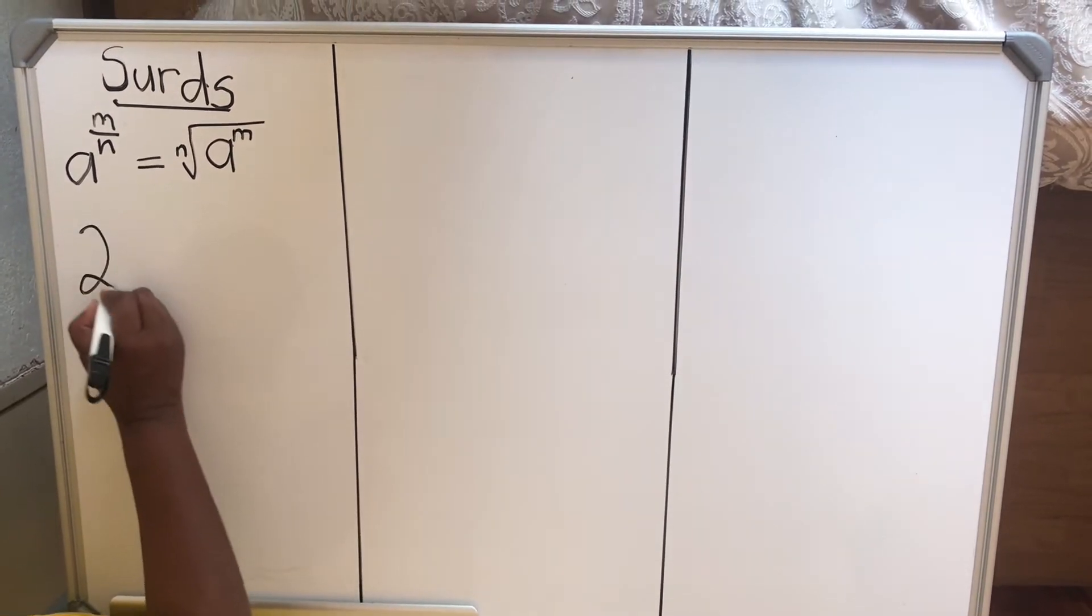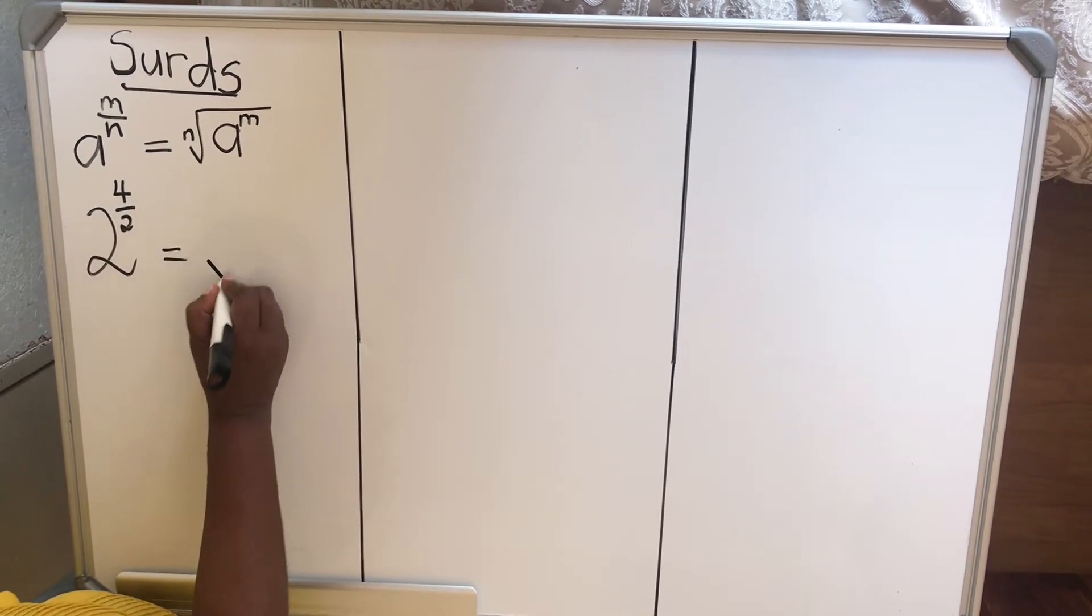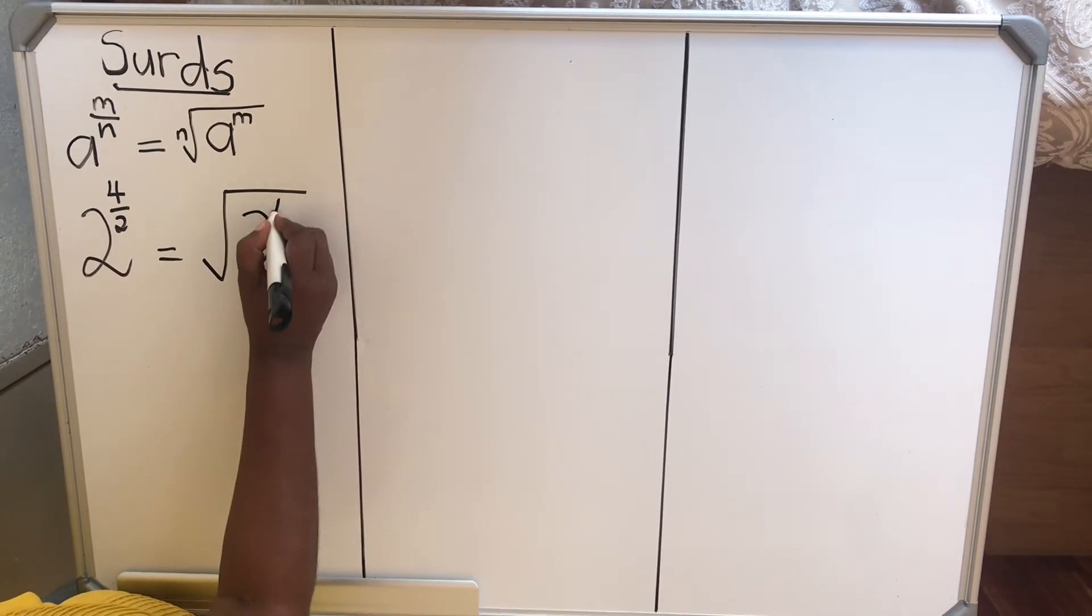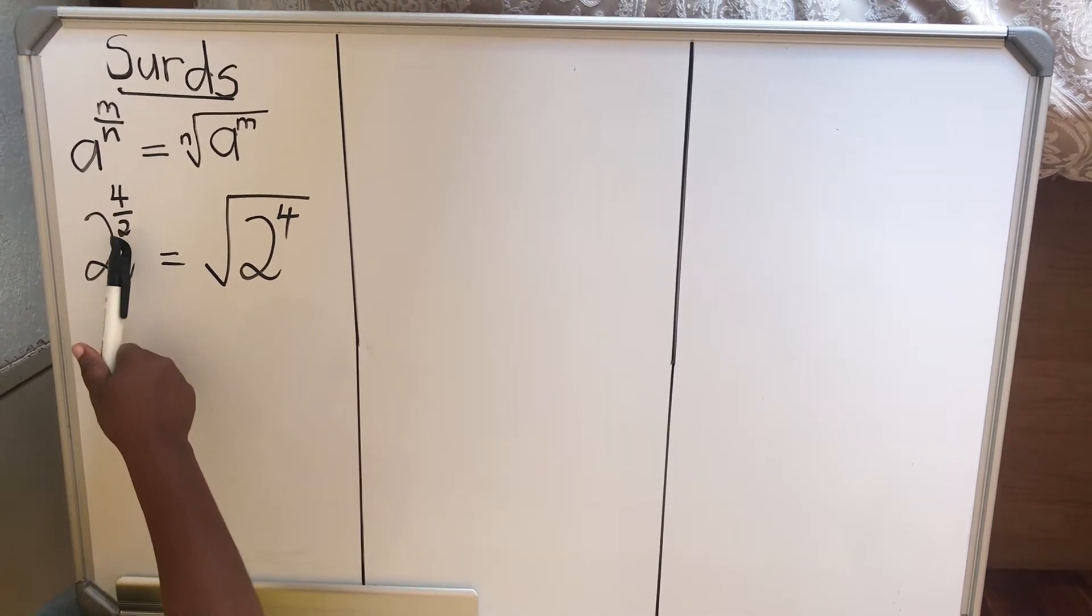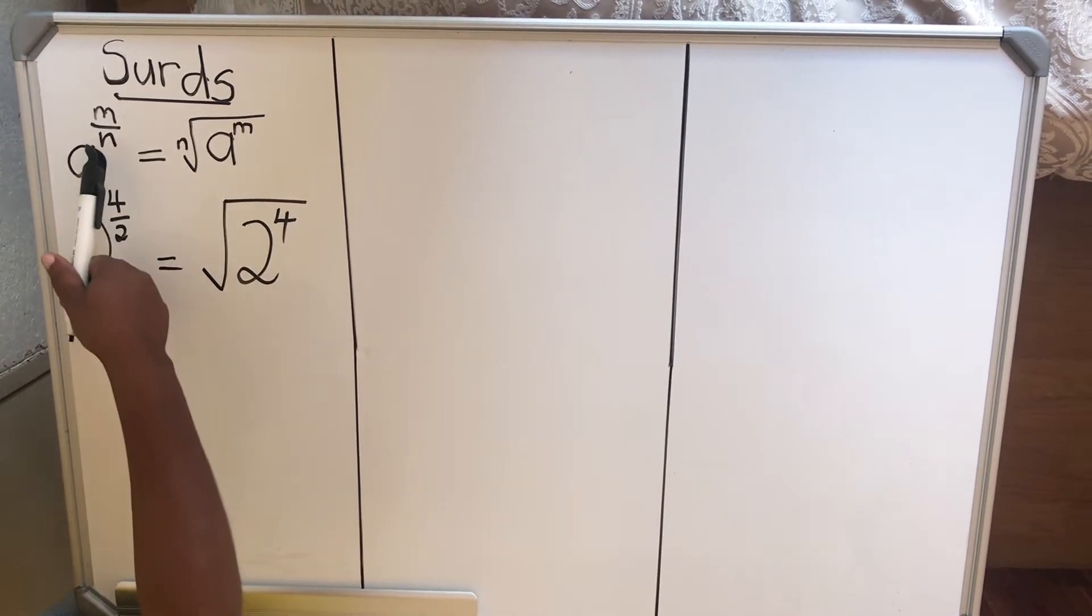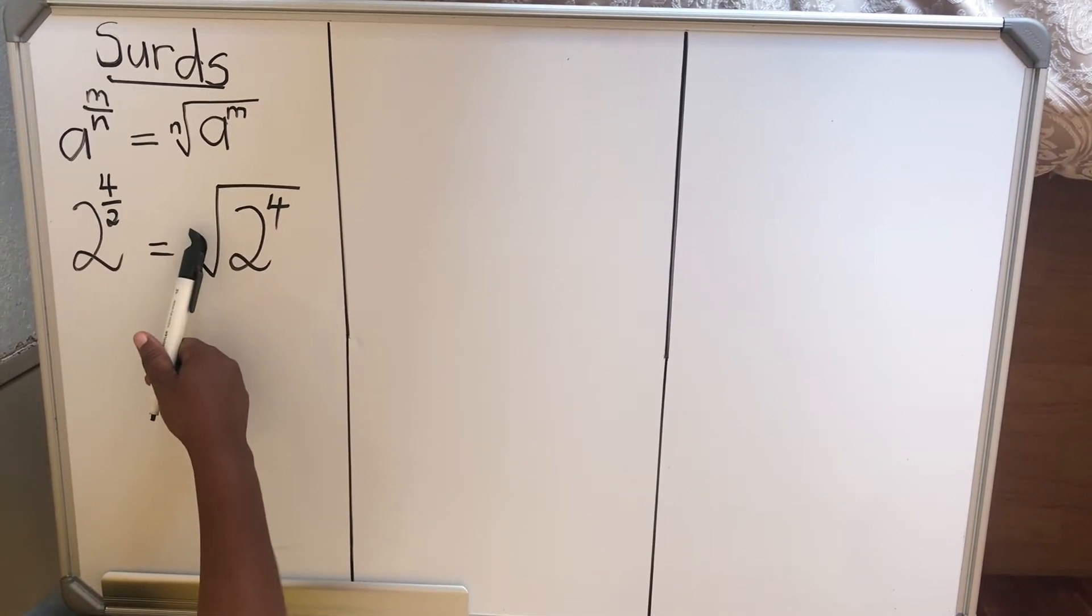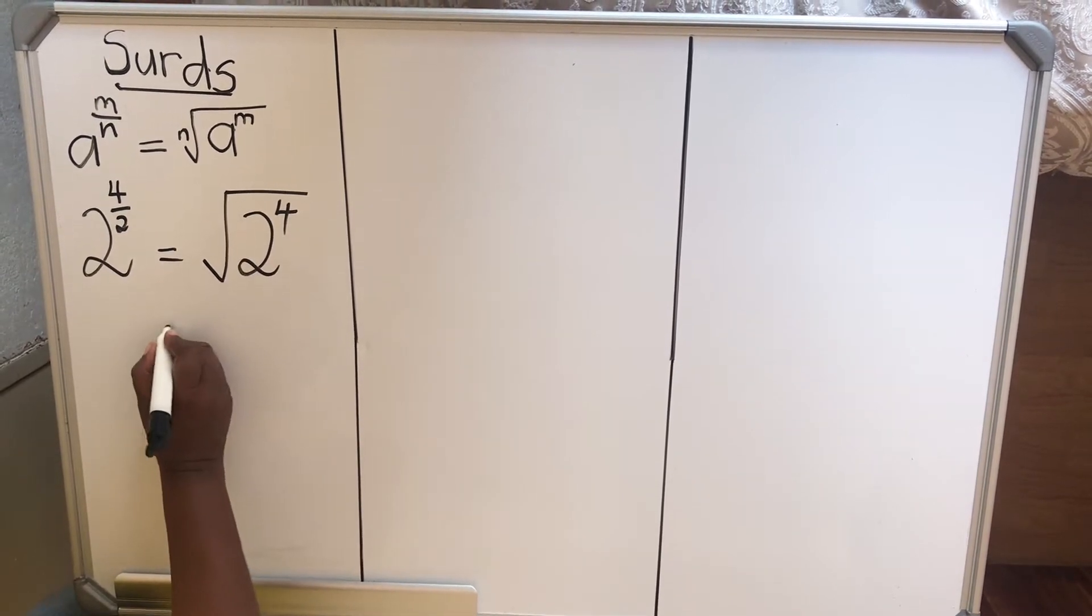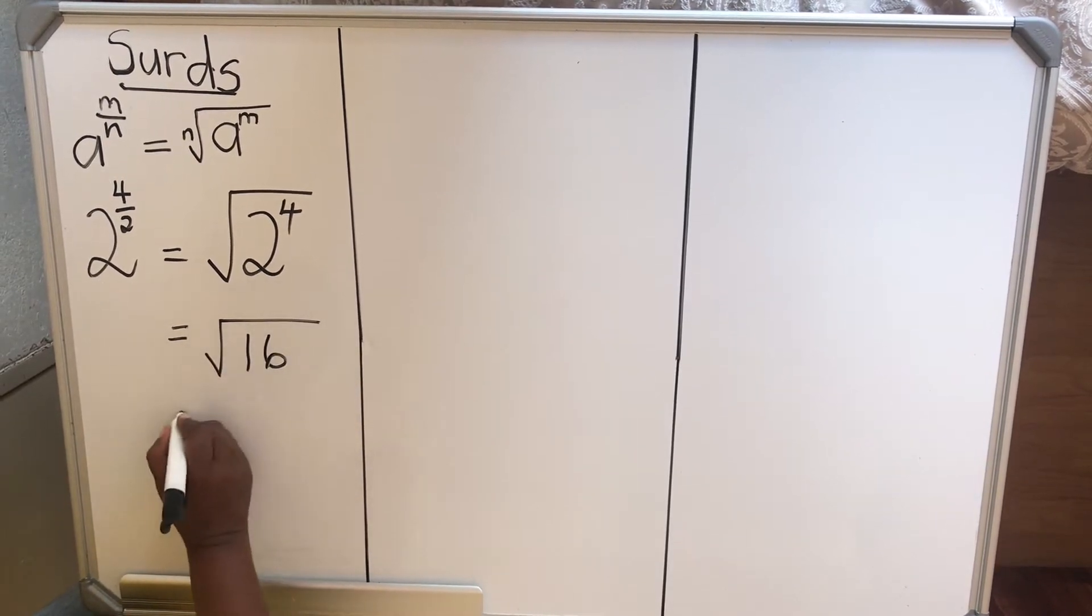Let's take an example if we have 2 to the power 4 over 2. So when you write it in a surd form, you're going to write square root of 2 to the power 4. Now, when you have a denominator as 2 and you're writing it in a surd form, we write nothing. So when you see a radical that doesn't have anything there, it means it's a 2. So let's sort this thing out and see what's the answer. 2 to the power 4 is 16 and square root of 16 is 4.